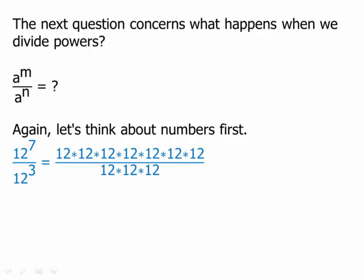Obviously we're going to get some cancellation here. We're going to be able to cancel one, two, three factors of twelve in the numerator and denominator. Everything in red cancels, and when you cancel it just becomes one. So we are left with four factors of twelve, and that's twelve to the fourth. Twelve to the seventh divided by twelve to the third equals twelve to the fourth — right there that suggests the rule.